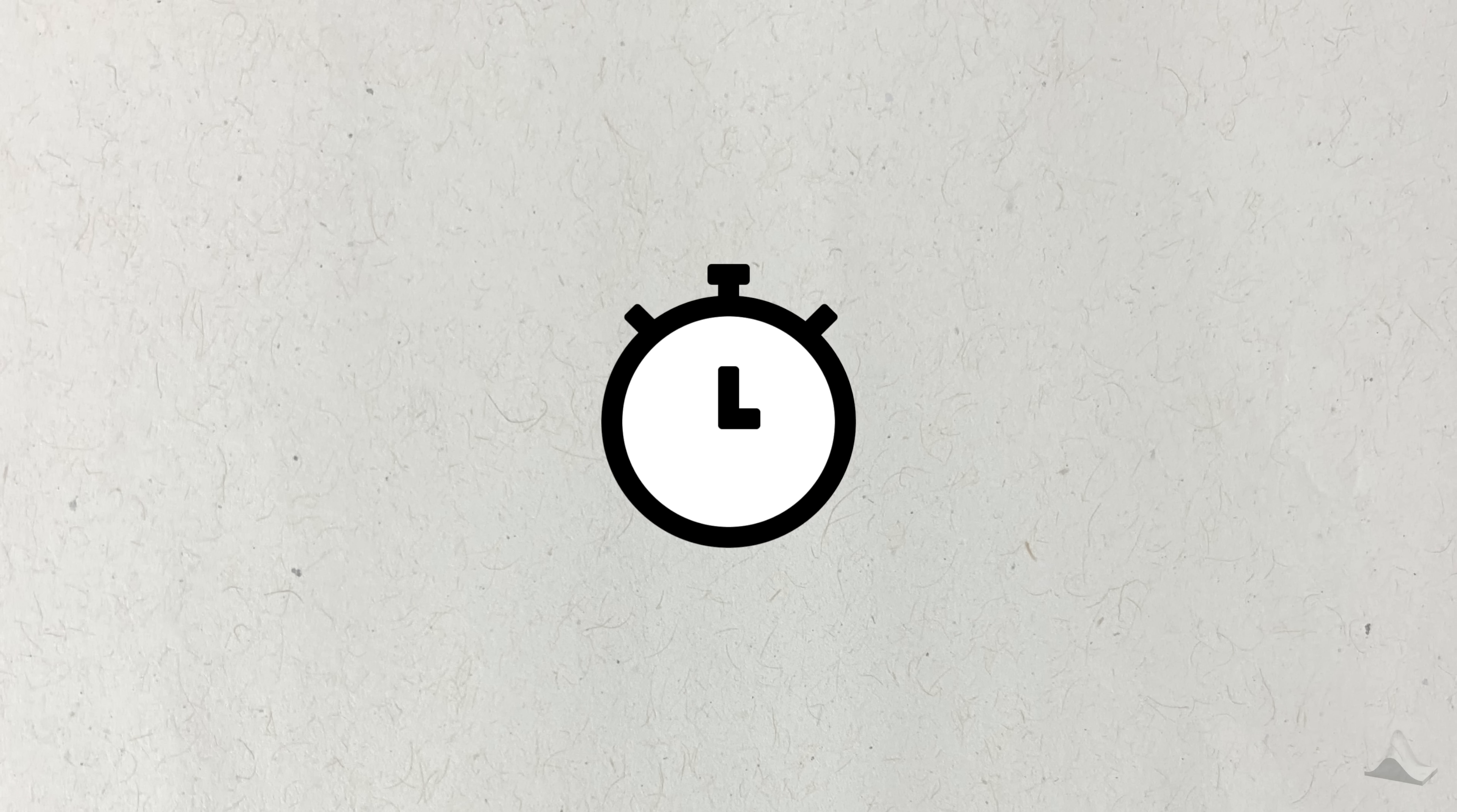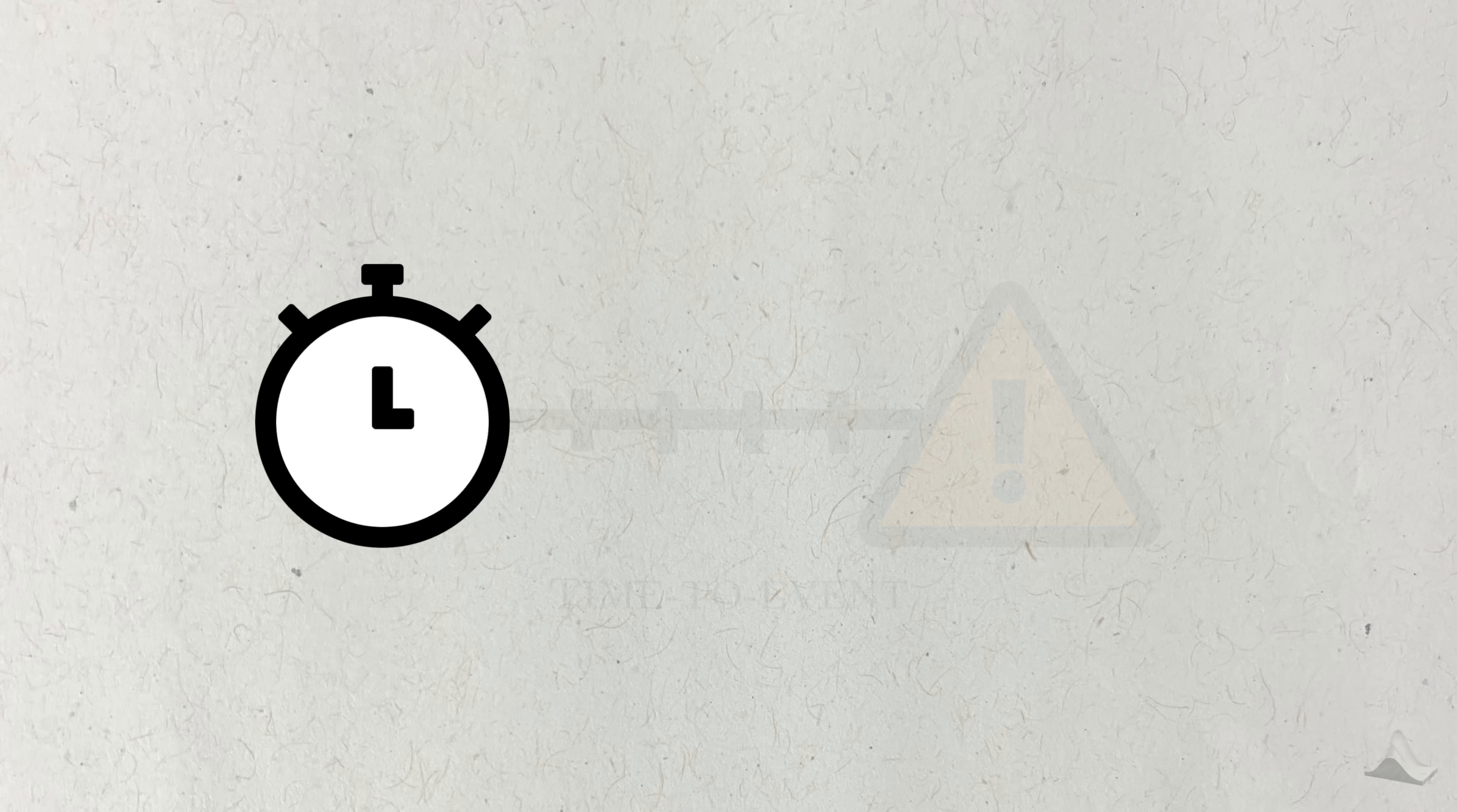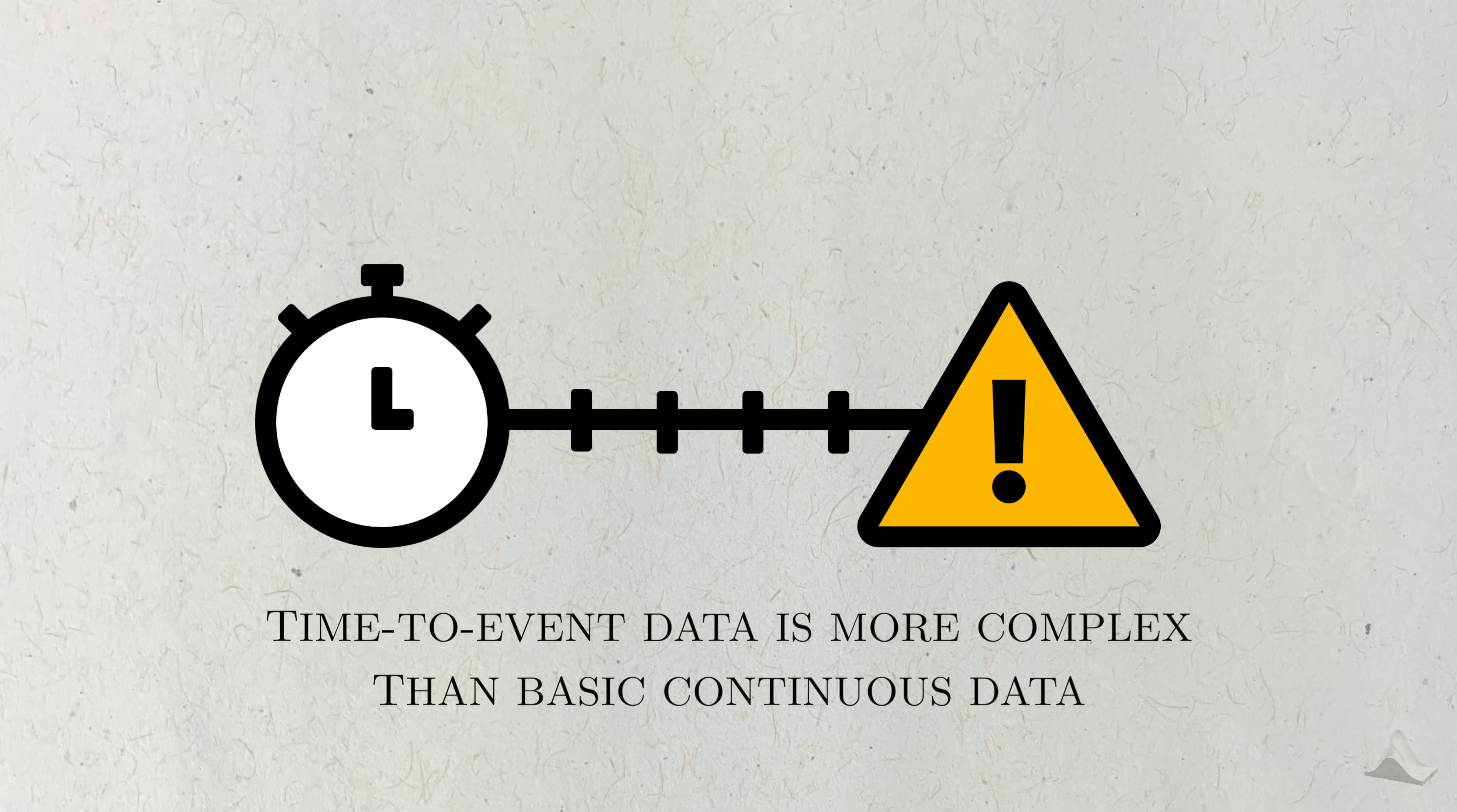One of the distinguishing features of survival analysis is that it deals with time data. Not just time, but time to an event. Time to event data is more complex than basic continuous data, so it's worth delving into the specifics of this type of data. To define a time to event random variable, we need three things.